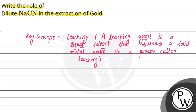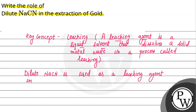Dilute sodium cyanide is used as a leaching agent in the extraction of gold. तो gold की extraction में जो हमारा dilute sodium cyanide है, वो leaching agent का काम करता है।